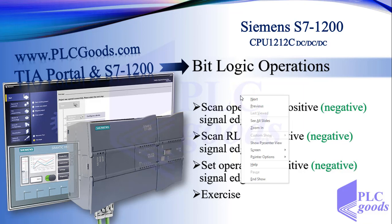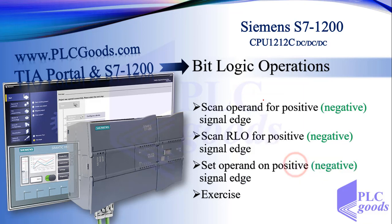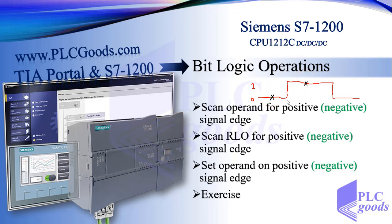Let me explain. For these instructions, the state of an address does not matter — whether it is zero or one. These instructions are used to query a zero-to-one change in the signal state, or a one-to-zero change.